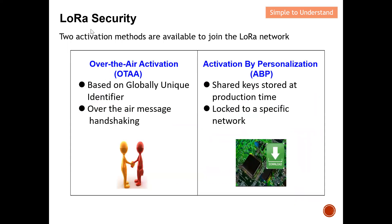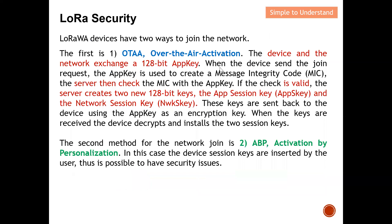As mentioned earlier, there are two activation methods for the end device to join the LoRaWAN network. The first method we're going to discuss is Over the Air Activation. The other method is Activation By Personalization. These are the two ways to join the LoRa network.